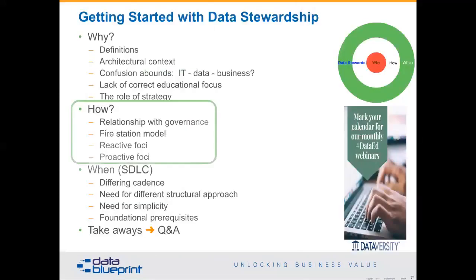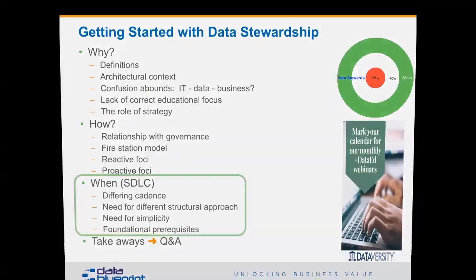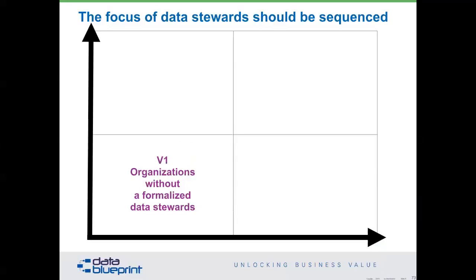Let's dive a little further into what I call the when. In organizations without stewards, you've got two strategies: stewards can improve organization operations or they can innovate. Stewards do need to be actively involved in the focus of what they're trying to accomplish. Walmart is expert at increasing organizational operational efficiencies — absolutely fantastic. And Apple using creative opportunities — Apple's the innovation, Walmart is really good at operational efficiency.